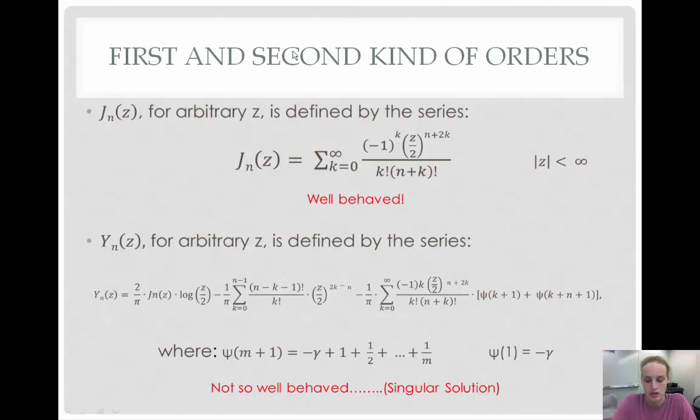y sub n of z, on the other hand, is not so well-behaved. And this actually has three summations in it, one of them being j sub n of z. Where, psi of m plus 1 is equal to little gamma plus 1 plus 1 over 2 plus the summation all the way to 1 over m. And this is the singular solution.